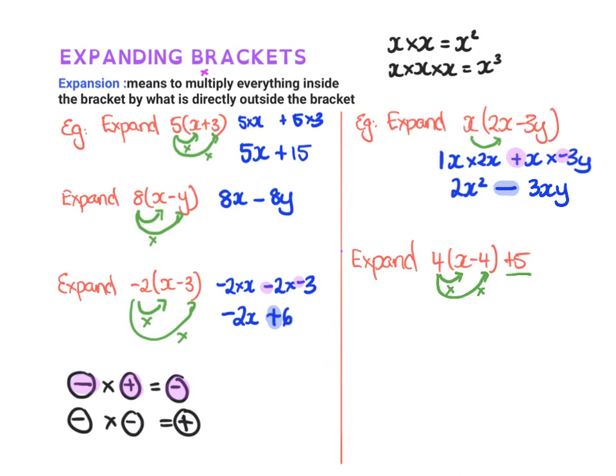So we've got 4 times x, which is 4x, and then we've got 4 times negative 4. So that would be positive 4 times the negative 4. It's going to give a negative answer. It should be negative 16, then plus 5.